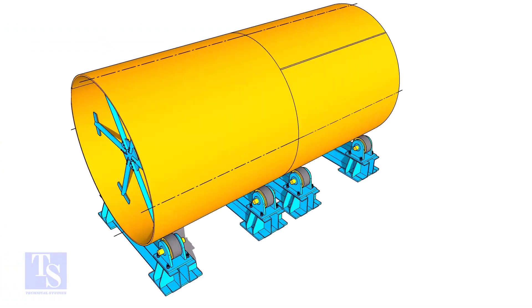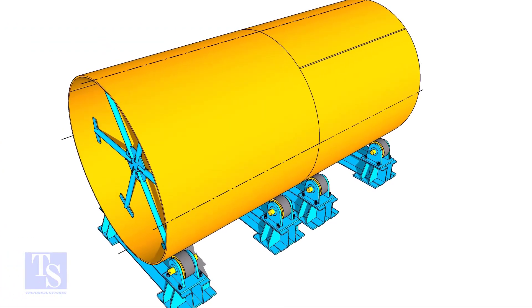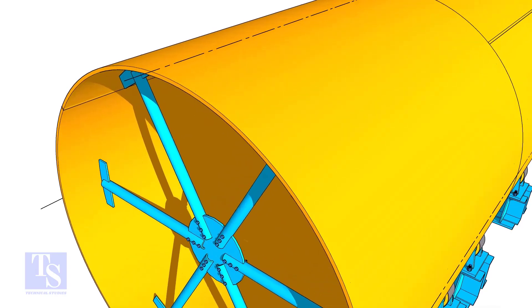Once the welding of the individual shells is complete, double the shells. Make sure the long seams of the shells are not in a line or too close.